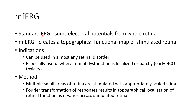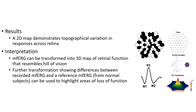Now let us discuss about multifocal ERG. In standard ERG we sum electrical potentials from the whole retina, whereas multifocal ERG creates a topographical functional map of the stimulated retina. It can be used in almost any retinal disorder, and is especially useful where retinal dysfunction is localized or patchy, like early hydroxychloroquine toxicity. Multiple small areas of retina are stimulated with appropriately scaled stimuli, and Fourier transformation of responses results in topographical localization of retinal function. A two-dimensional map demonstrates topographical variation in responses across the retina. Multifocal ERG can also be transformed into a three-dimensional map of retinal function that resembles the hill of vision.